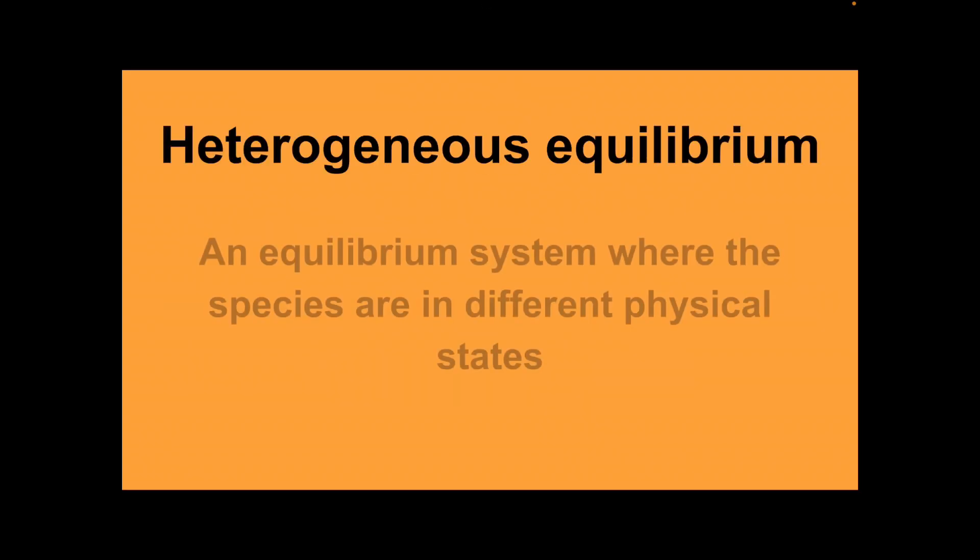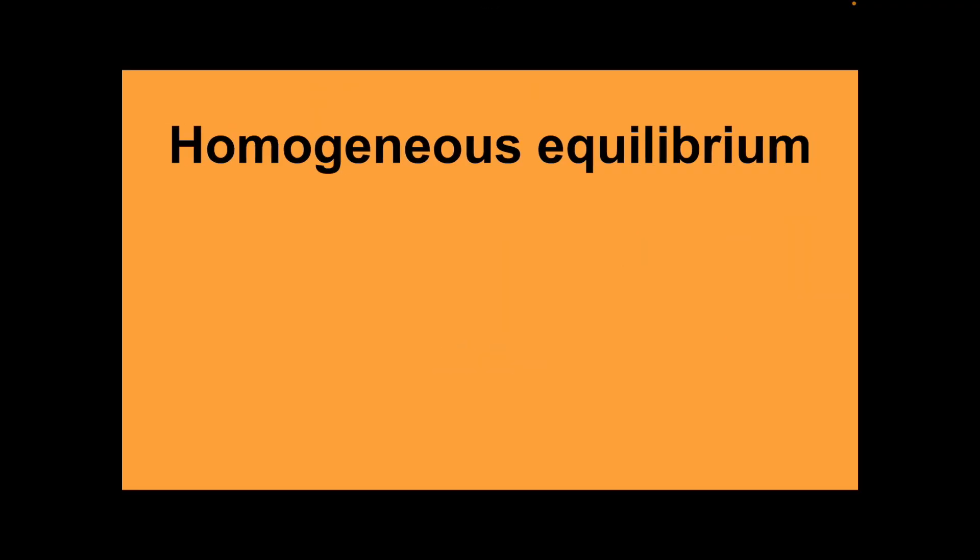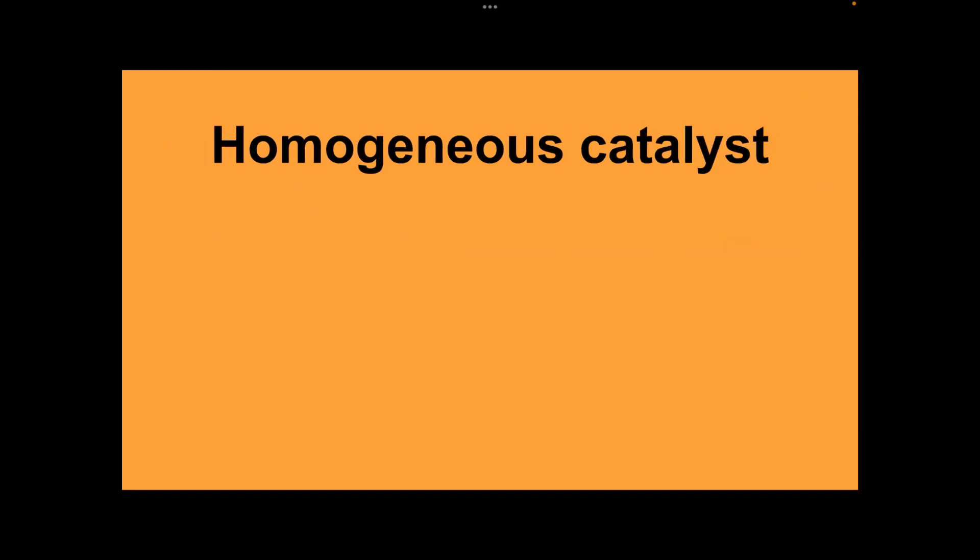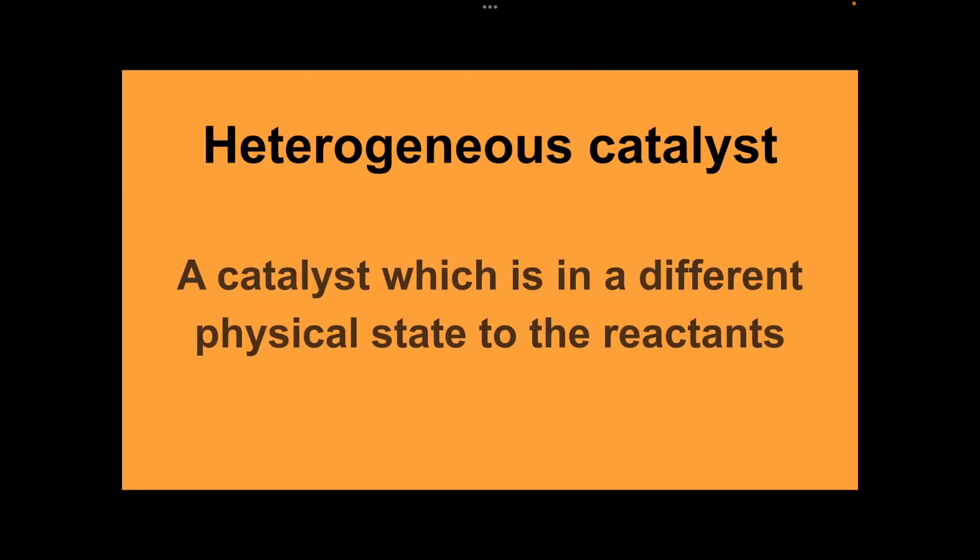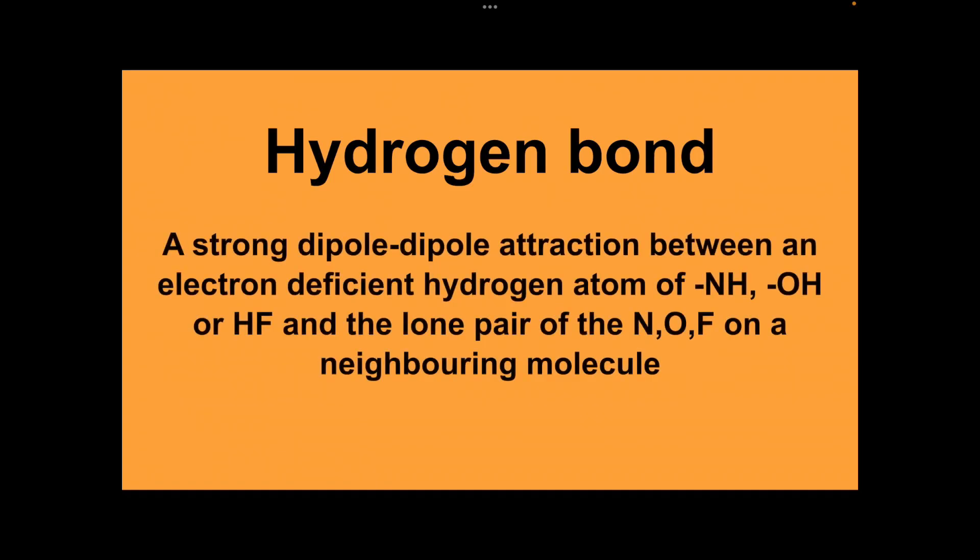Heterogeneous equilibrium: an equilibrium system where the species are in different physical states. Homogeneous catalyst: a catalyst which is in the same physical state as the reactant. Heterogeneous catalyst: a catalyst which is in a different physical state to the reactants. Hydrogen bond: a strong dipole-dipole attraction between an electron-deficient hydrogen atom of NH, OH or HF and the lone pair on the N, O or F of the neighbouring molecule.